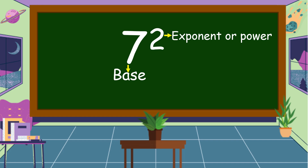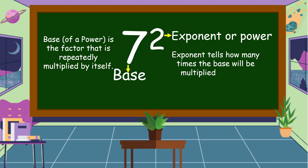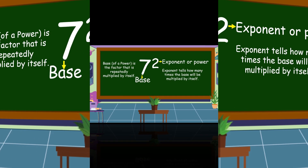What is the base? The base of a power is the factor that is repeatedly multiplied by itself. What is the exponent or power? The exponent or power tells how many times the base will be multiplied by itself.